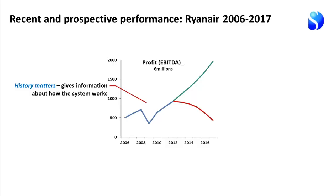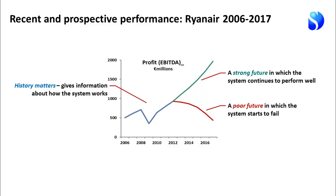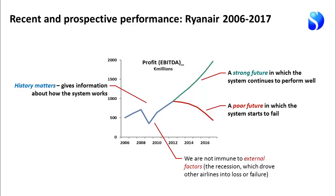The second part is a view of what a strong future looks like, in which the system continues to perform well, and what a poor future looks like, in which the system starts to fail. Not everything is under our own control — this company, like many others, was not immune to the recession of 2008-2009. As it happens, Ryanair survived that recession quite well, but it actually drove other airlines into losses or failure.